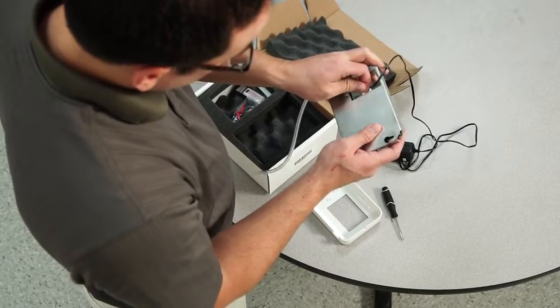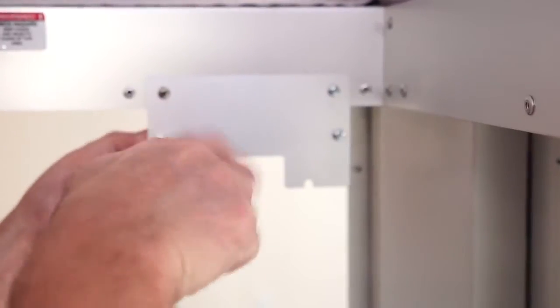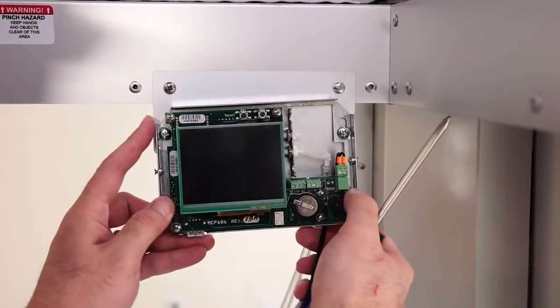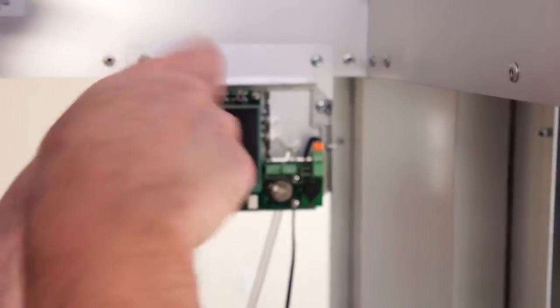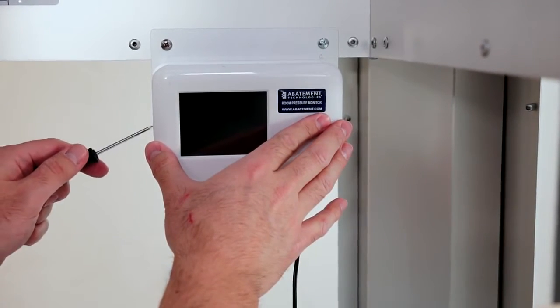Connect the elbow to the bottom port on the pressure monitor, making sure that the tubing feeds through the back of the unit. Loosen the two screws on the pressure monitor mounting plate. Place the pressure monitor on the mounting screws and then tighten the screws to secure the monitor in place. Replace the monitor's faceplate and tighten the two side screws.